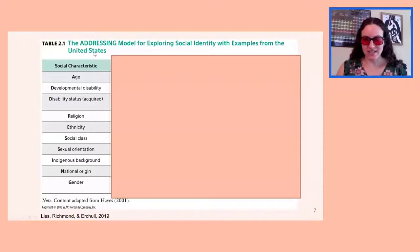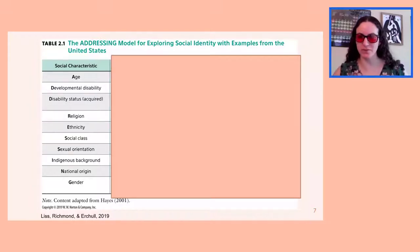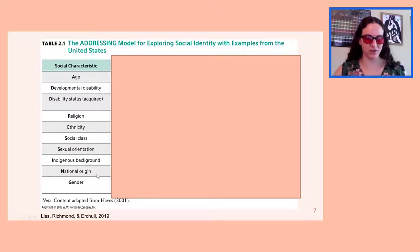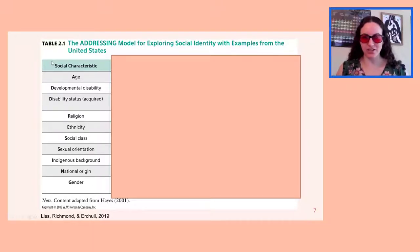The social identity framework comes from what we call the ADDRESSING model, which identifies social characteristics including age, developmental disability, disability status acquired, religion, ethnicity, social class, sexual orientation, indigenous background, national origin, and gender. So the idea is that I am not just a woman — I have all of these additional social identities.